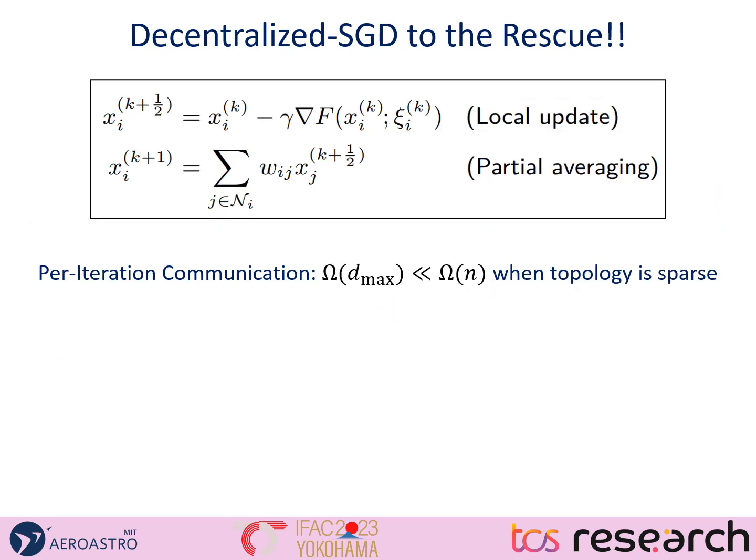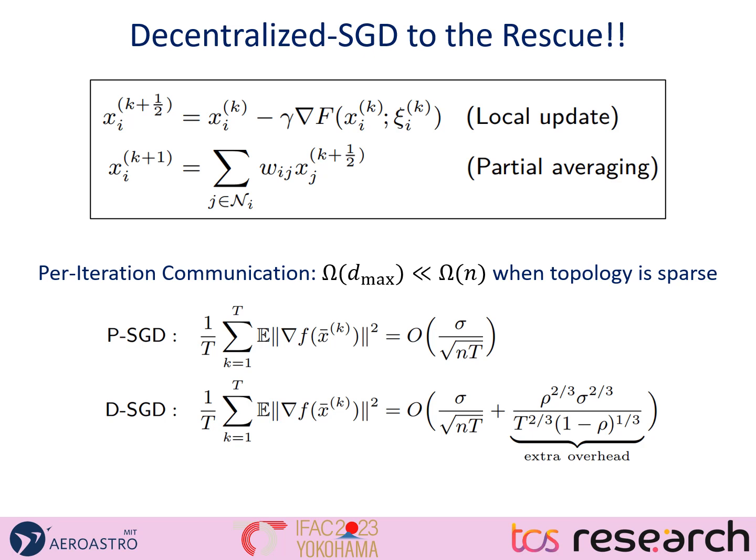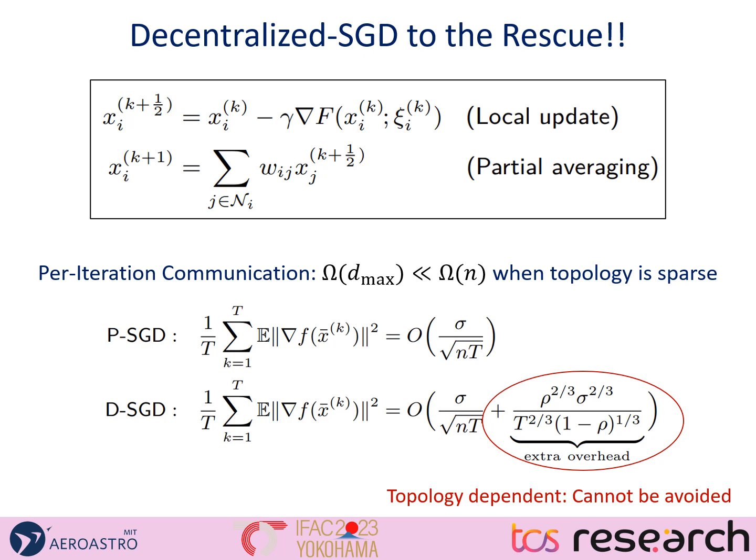To address this issue, distributed stochastic gradient descent-based methods were developed where the communication overhead was reduced to just proportional to the degree of the underlying topology instead of the number of nodes, which can be very low when the graph topology is sparse. But one issue with distributed SGD methods is there's an extra overhead in convergence due to the topology parameters, particularly the parameter rho, which is dependent on the eigenvalues of the underlying graph topology. So what we really need is redesigning the algorithm itself so that we can reduce both the communication overhead as well as the computational overhead.